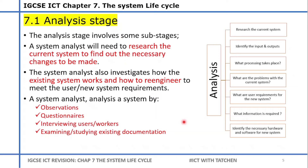At the analysis stage, the people involved are system analysts — specialists who research the current system to find the necessary changes to be made. Within the analysis stage, the analyst researches the current system, identifies the inputs and outputs: what are you entering into the system, what is coming out, what processes take place? For example, you type letters on a keyboard and expect to see them in a word document.